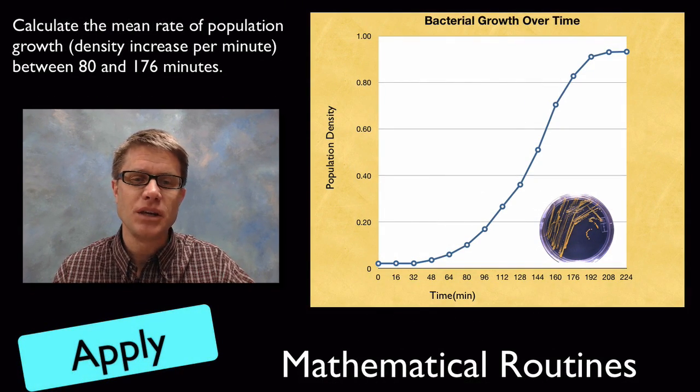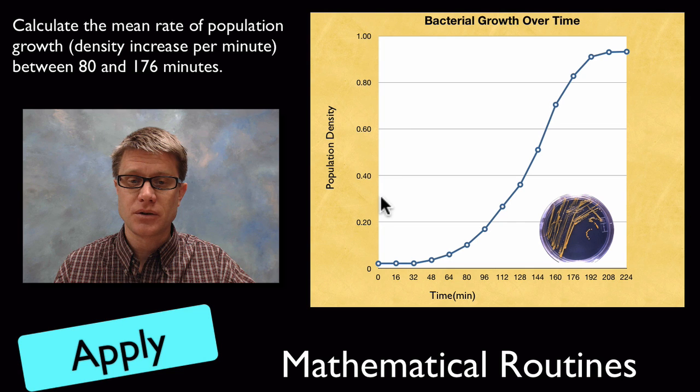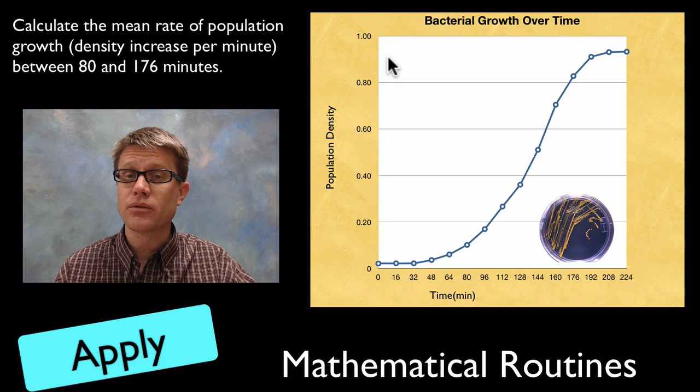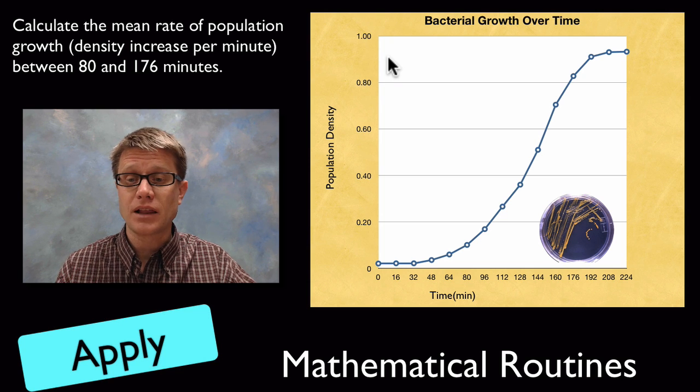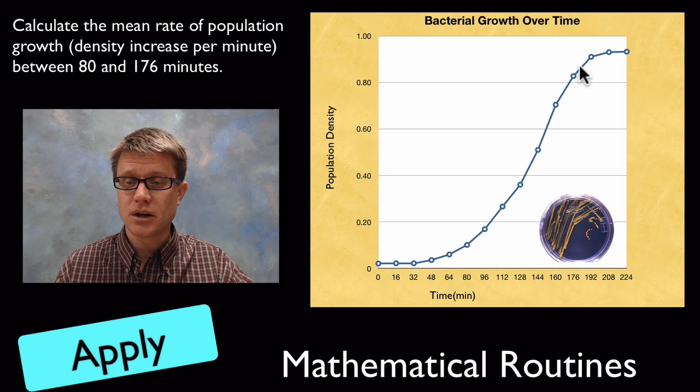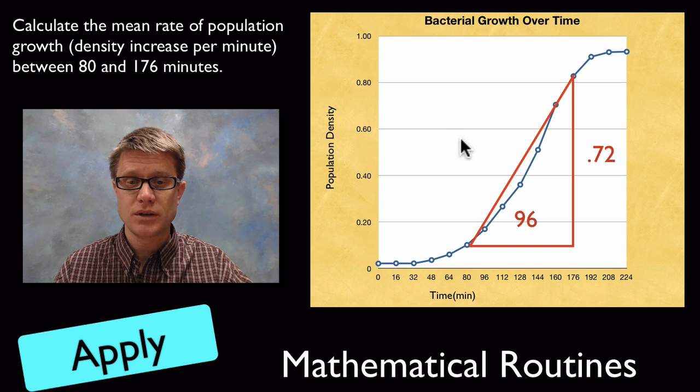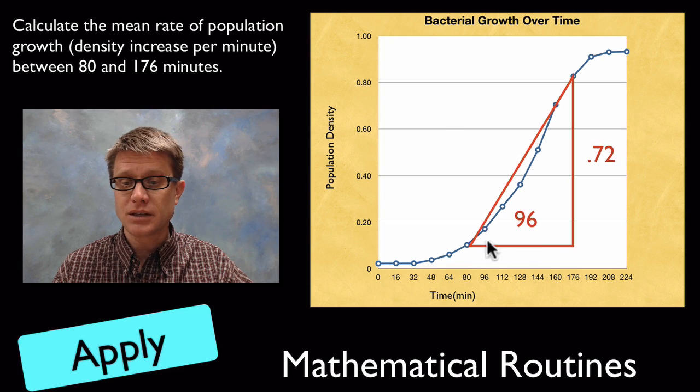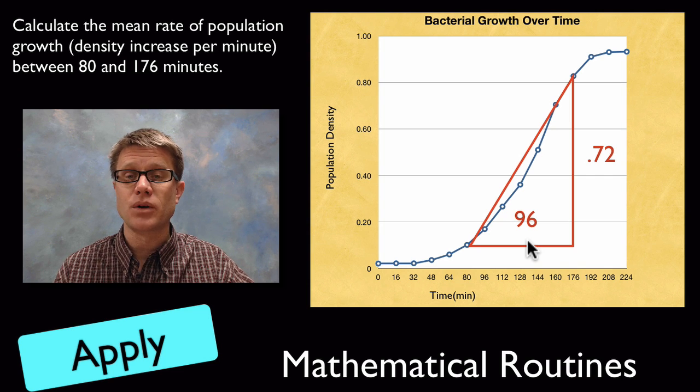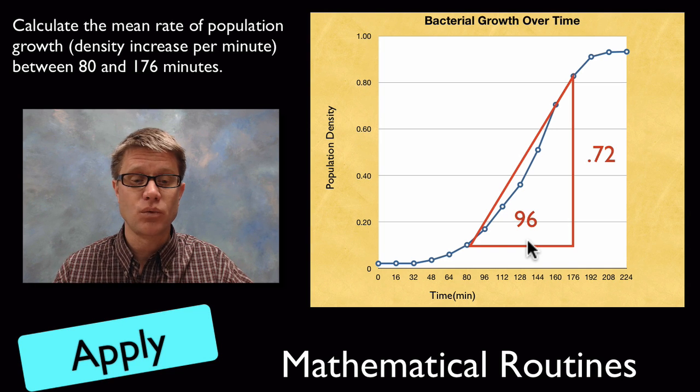In this question they're asking us to calculate the mean rate of population growth between 80 and 176 minutes. This is bacterial growth. You can see the density went from almost 0 towards 1. If you're ever asked to do a growth rate, that's going to simply be the slope of that line. Slope is very important, especially if we're looking at data. From 80 to 176 minutes, how do I calculate slope? That's going to be the rise over the run. I would draw in a little triangle. Calculate the rise. In this case it's going to be about 0.72 change in population density. My time or my run is going to be around 96 minutes. If I divide my rise by the run I'm going to get 0.0075 density increase per minute.